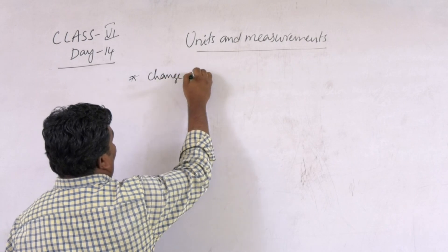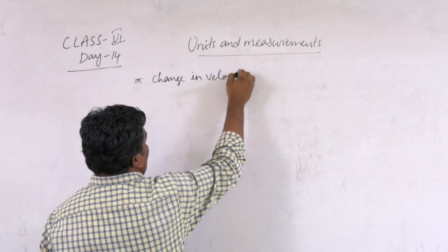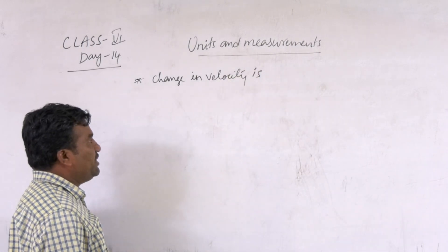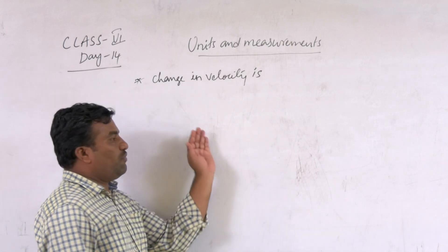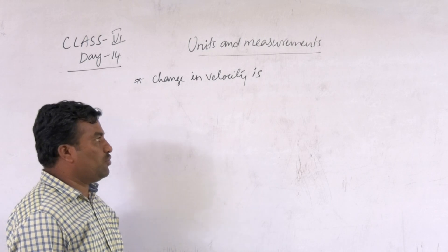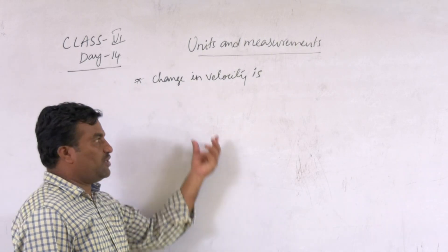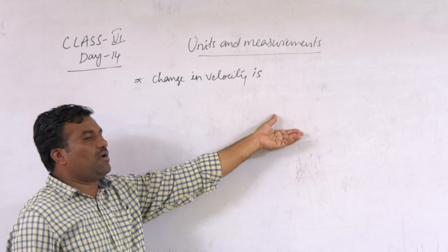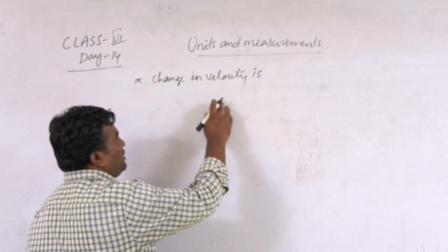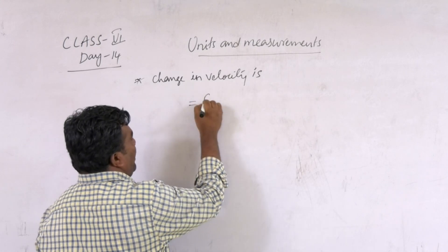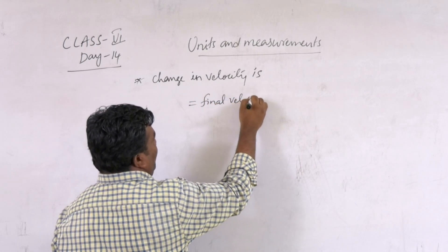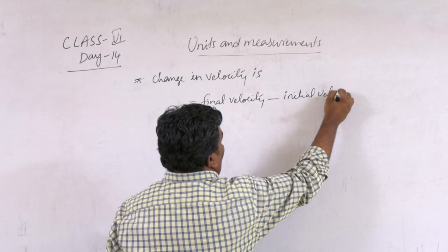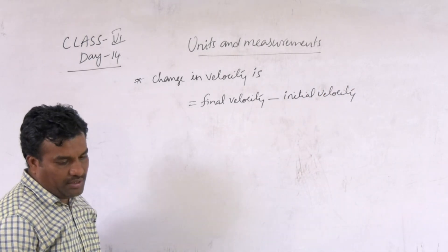Change in velocity. So change in velocity means, you know, when a vehicle travels from one point to another point, it can change velocity. The first point is the initial position or initial velocity, and the second point is the final. That's why change in velocity is final velocity minus initial velocity. It is called change in velocity.